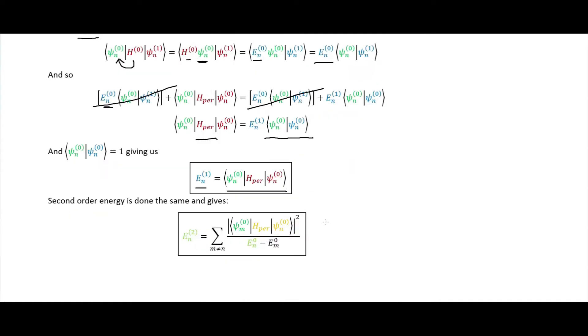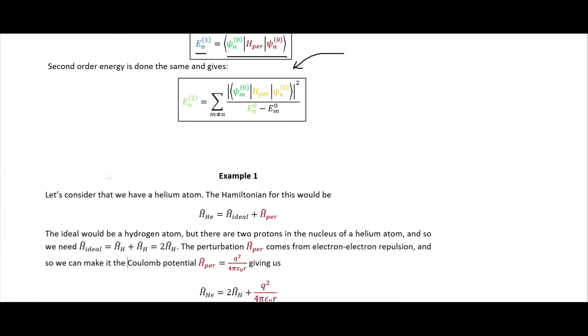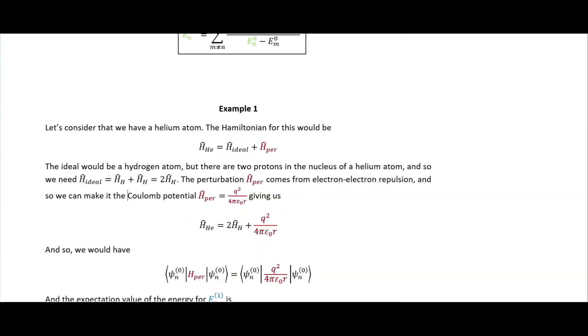The inner product of orthonormal states equals one, so we end up with the first-order energy correction shown here. For the second order we get a similar expression, and you can keep going to third and fourth order. Higher orders give more accuracy, but as we'll see, the first order is actually quite decent.